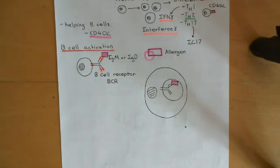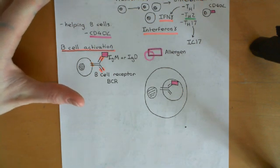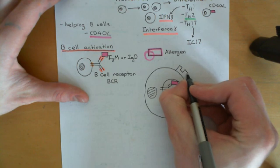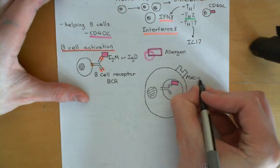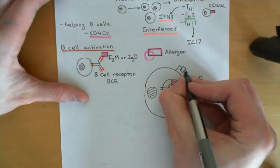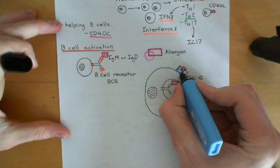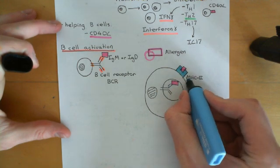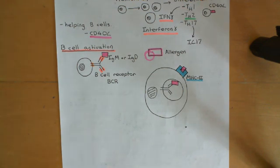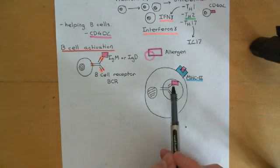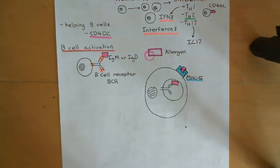You don't necessarily launch the B-cell response just because you've got the T-cell response — it's only if you've got the T-cell response. The B-cell internalises the bound allergen and chops it up, putting fragments on its surface bound to MHC class II. This MHC class II molecule will have little fragments of the allergen molecule bound to it. The B-cell now needs to find T-helper cells that have T-cell receptors directed against a fragment of this allergen.